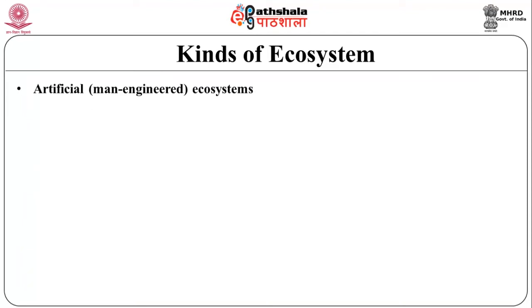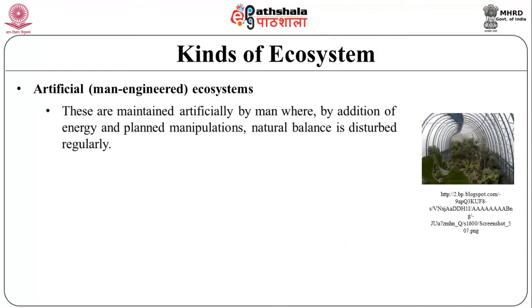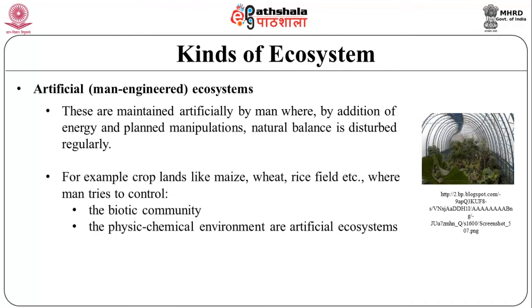The next type of ecosystem is the artificial or man-engineered ecosystem. These are maintained artificially by man whereby addition of energy and plant manipulation distributes the natural balance regularly. For example, croplands like maize, wheat, and rice fields, where man tries to control the biotic community as well as the physical and chemical environment, are artificially based ecosystems.